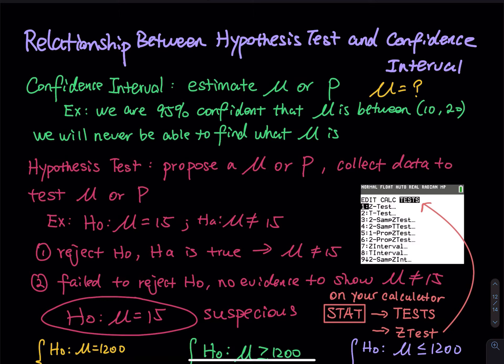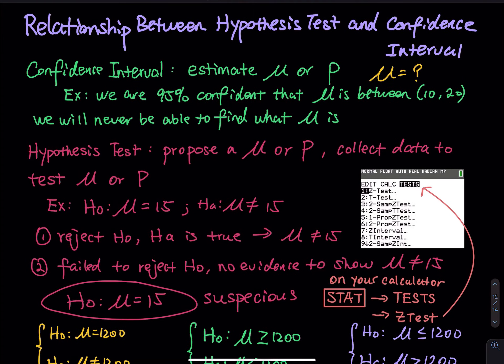For example, let's say I propose that mu is equal to 15 and the alternative hypothesis is mu is not equal to 15. There are two different conclusions. Number one: you reject H0, HA is true — that means mu not equal to 15 is a true statement. Number two: you fail to reject H0 and there is no evidence to show that HA is true, so you are not able to show that mu is not equal to 15, meaning H0 (mu equals to 15) remains suspicious.